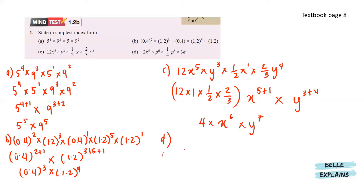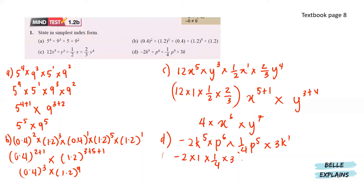And lastly for d, we have negative 2k to the power of 5 times p to the power of 6 times 1 over 4 times p to the power of 5 and 3k. The lone k has a power of 1. Putting the numbers together: negative 2 times 1 over 4 times 3, all in a bracket. Then we have k to the power of 5 plus 1 and p to the power of 6 plus 5. So that gives us negative 3 over 2, k to the power of 6, and p to the power of 11.